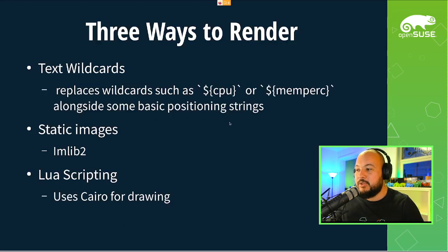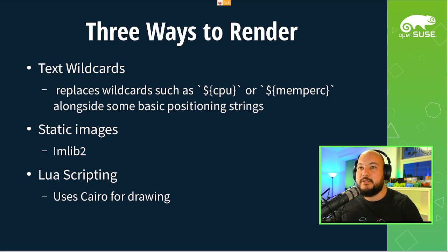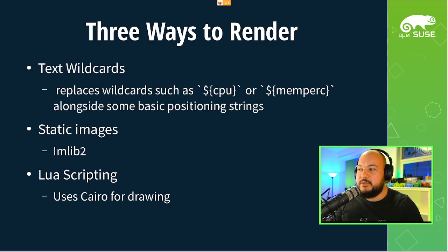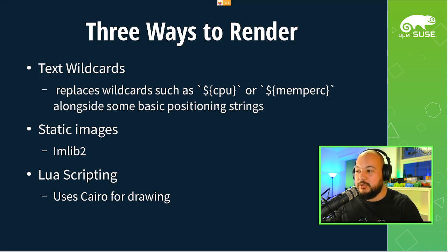Coming into the basics, Conky is a reasonably basic tool. There are three ways to render your output. The first is using text wildcards - you write some text saying CPU and then use a magical variable and things show up. With IAMLib2, you can also draw static images. And probably the one you saw most in those screenshots was mostly using Cairo and Lua scripts, which is what we're going to exploit in today's talk.